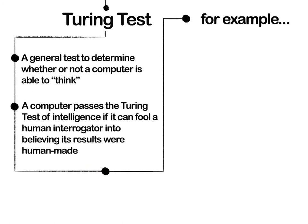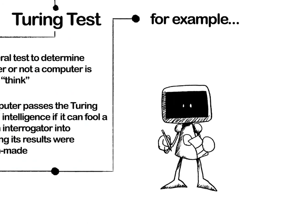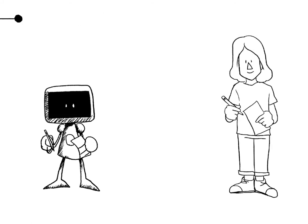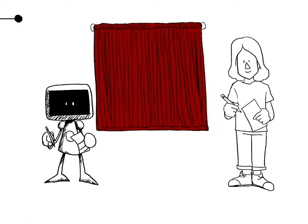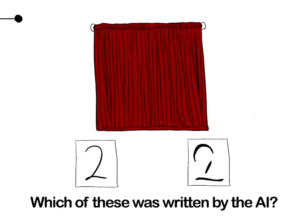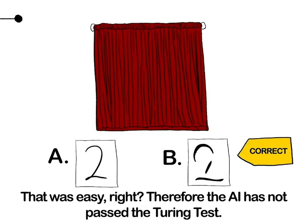For example, which of these two digits was written by the AI? Most people guessed correctly that this was written by the AI. Therefore, the AI has not passed the Turing Test.